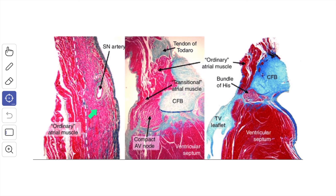In the SA node and the AV node, the muscle fibers are embedded in a prominent stroma of connective tissue containing many blood vessels and nerve fibers. Atrial myocardial fibers secrete a natriuretic hormone when they are excessively stretched, as in some diseases. This hormone increases the renal excretion of water, sodium, and potassium. It also inhibits the secretion of renin by the kidney and of aldosterone by the adrenal glands, thus reducing blood pressure.